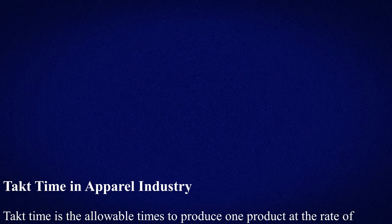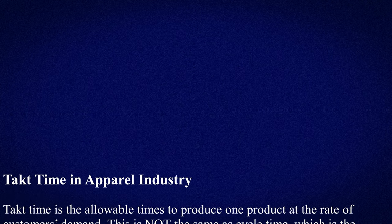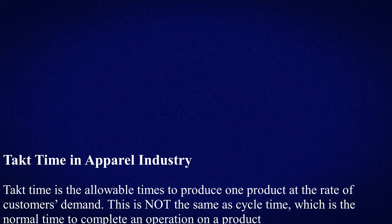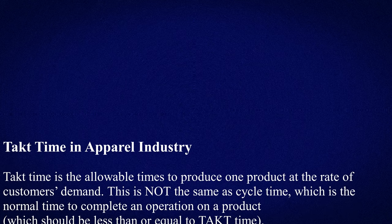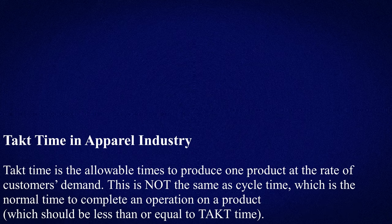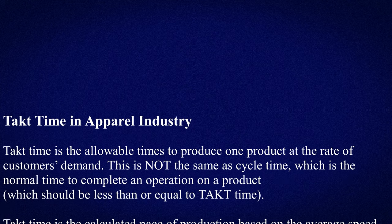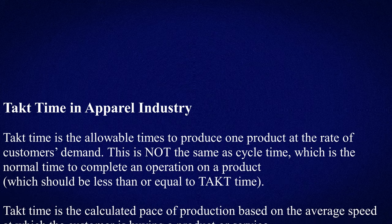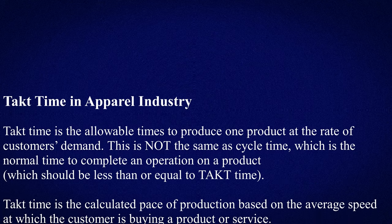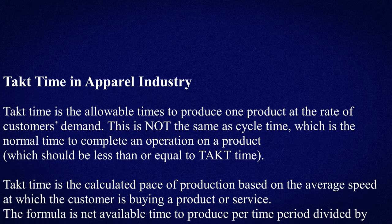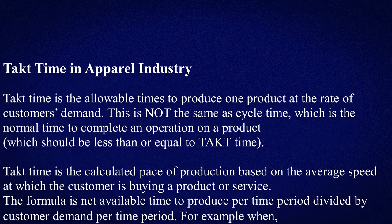Takt time in the apparel industry: takt time is the allowable time to produce one product at the rate of customer demand. This is not the same as cycle time, which is the normal time to complete an operation on a product — cycle time should be less than or equal to takt time.